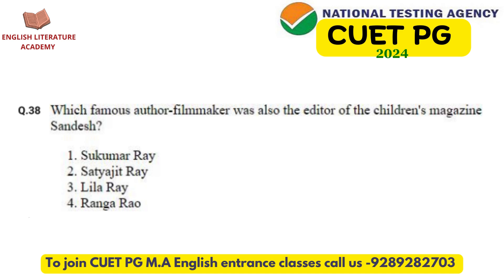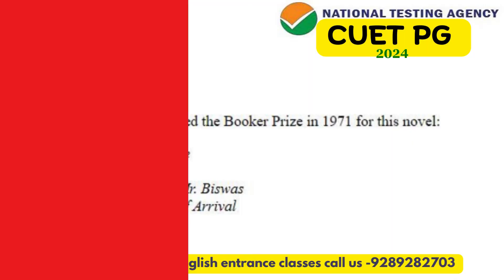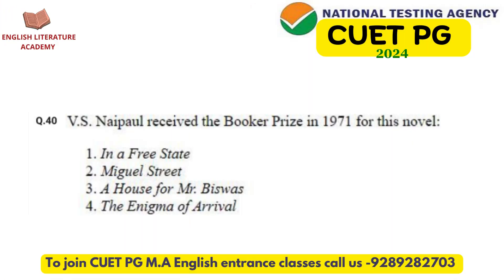The 39th question is about literary pieces written by African American author Octavia Butler. The 40th question is rather easy, as it is about the 1971 Booker Prize recipient V.S. Naipaul. Students should know which author received literary awards like these, in which year, and for which piece of writing.